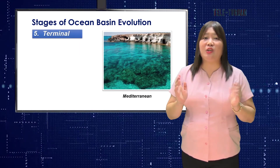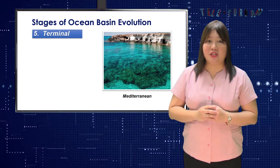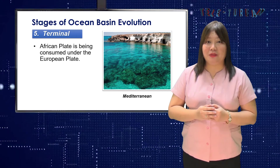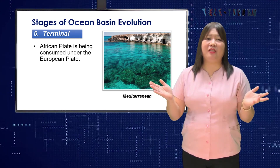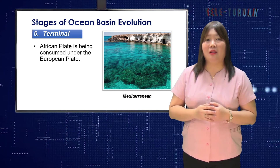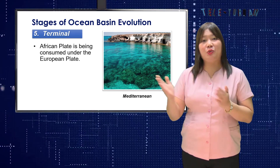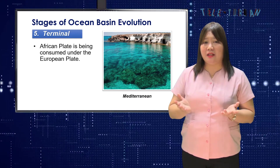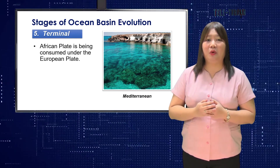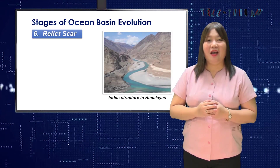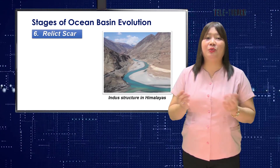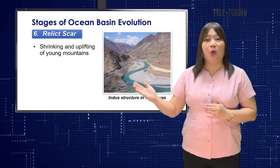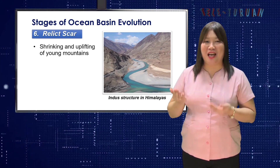The Mediterranean is an ocean in the final stages of its life in Stage 5, with the African plate being consumed under the European plate. Unless the world's system of plates changes to halt the northward movement of Africa relative to Europe, the continental blocks of Europe and Africa will eventually collide and new mountain ranges will form in Stage 6. Stage 6 corresponds to relict scar, such as the Indus suture in the Himalayas, which involves shrinking and uplifting of young mountains.